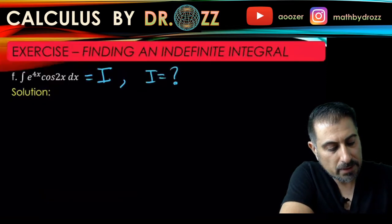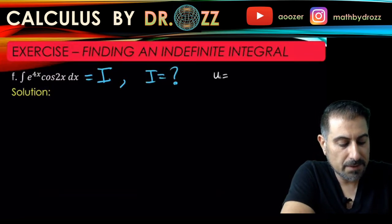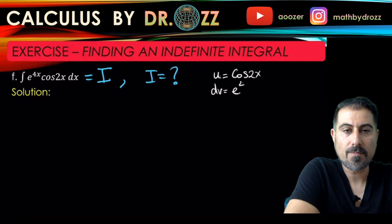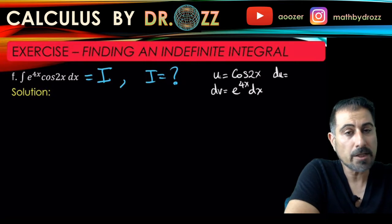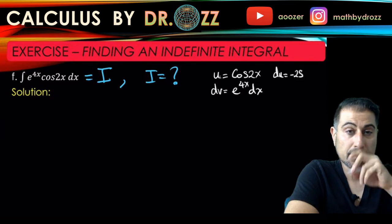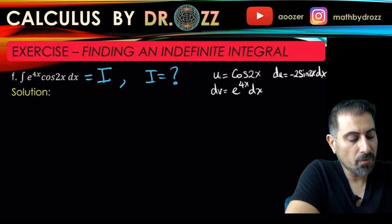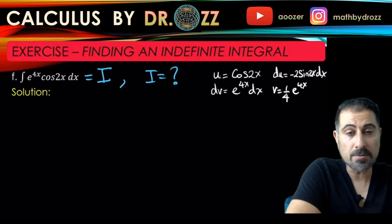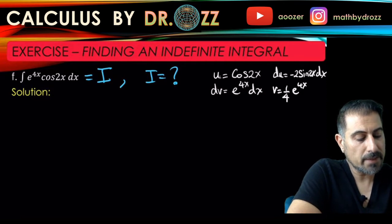Let's go back here. I'm going to start calling u to be cosine 2x and dv to be the rest, e to the 4x dx. I need du - that's the derivative of cosine 2x. You can use the chain rule if you want to. It's minus 2 sine 2x dx. And then v is one-fourth e to the 4x. That's you taking the antiderivative of e to the 4x.